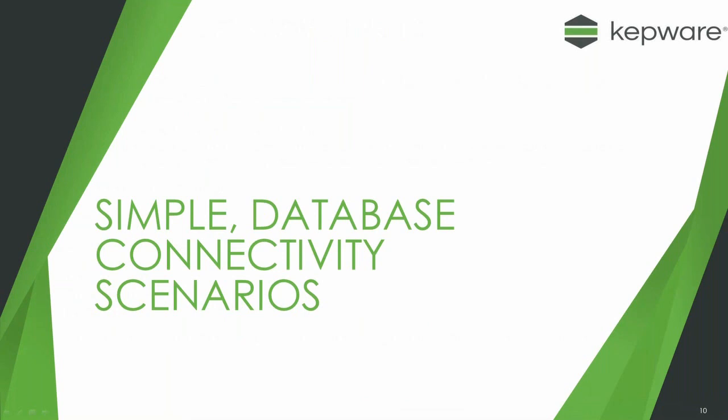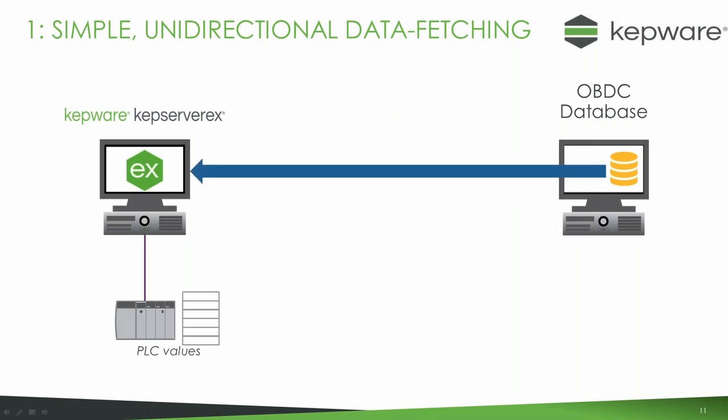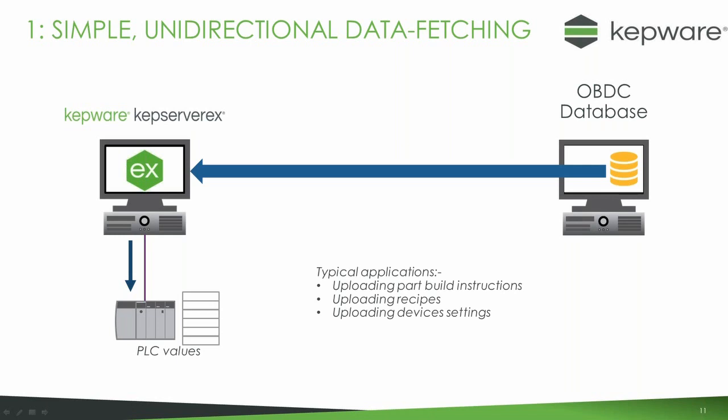Let's look at some scenarios about database connectivity, starting with simple ones. Here we have a database on the right-hand side and KEPServer communicating to a PLC on the left-hand side. The data is coming from the database to KEPServer, and KEPServer is then sending it down to the PLC — a simple unidirectional data fetch from the database down to the PLC. This is typically used for downloading recipes, part build instructions, or settings for the devices or machine.